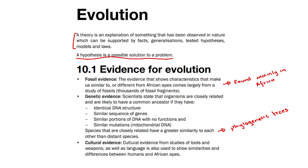The last one is cultural evidence. Cultural evidence from studies of tools and weapons as well as language is used to show similarities and differences between humans and African apes, as over time the development of tools and weapons became more advanced.